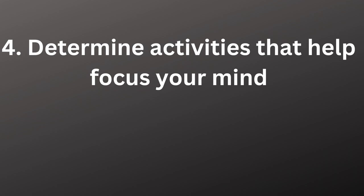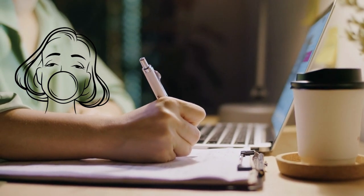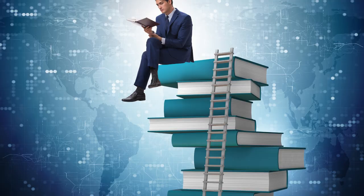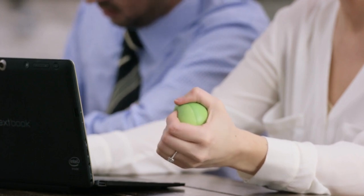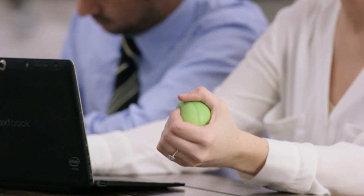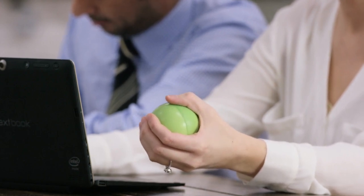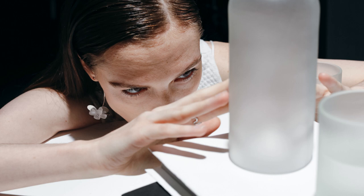4. Determine activities that help focus your mind, such as working a handheld stress ball or chewing gum. Kinesthetic learners can benefit from simple physical activity while learning. Some people find it helps them focus and concentrate for neurological reasons. An article published in the 2019 issue of Applied Cognitive Psychology found that chewing gum may improve attention, alertness, and learning. Kinesthetic learners are hands-on learners who need to walk through a process to understand its dynamics.